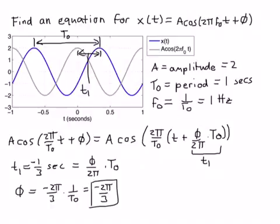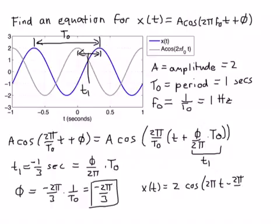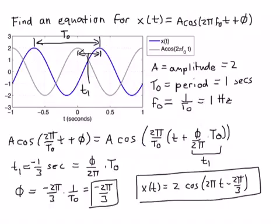We've solved it and have an equation for x of t: x(t) = 2 cosine(2π · 1 · t − 2π/3). That would be our final equation for x of t.